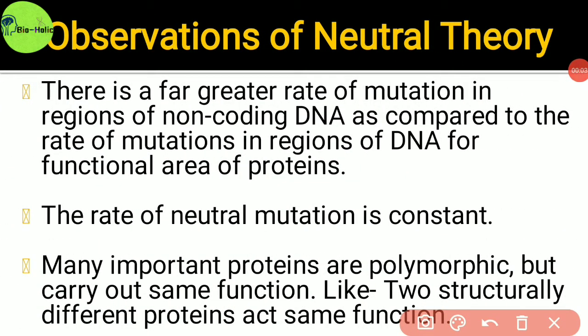There are mainly three observations of neutral theory. First, there is a far greater rate of mutation in regions of non-coding DNA — that means DNA which cannot produce polypeptide chains — compared to the rate of mutations in regions of DNA coding for functional proteins.